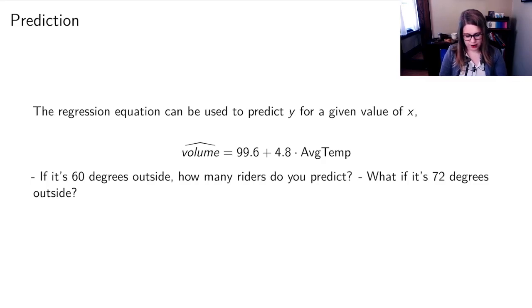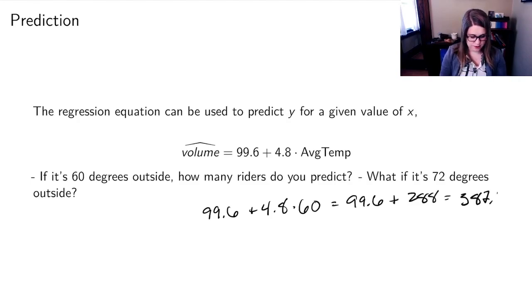So if it's 60 degrees out, how many riders do you predict? And then what if it's 72 degrees outside? So let's do the one for 60 degrees out. I'm going to do 99.6 plus 4.8, and then I'm going to plug in an average temperature of 60 degrees. So I've got 99.6 plus 288, and that's 387.6. So I'm going to round that to 388 because we can't have partial people. If it's 60 degrees outside, we would predict 388 people on the rail trail. And I'm going to let you try out for 72 degrees outside to see what the predicted number of riders would be at that temperature.